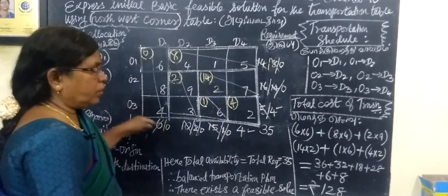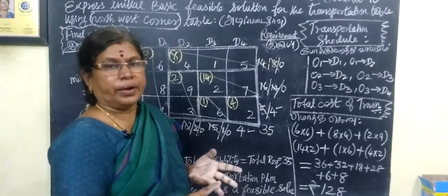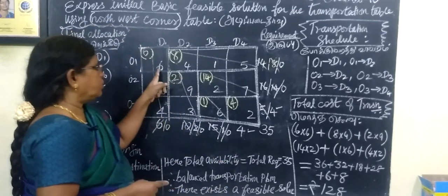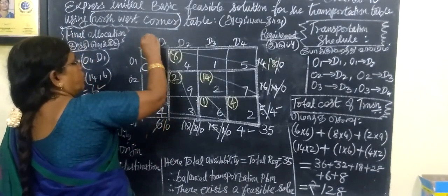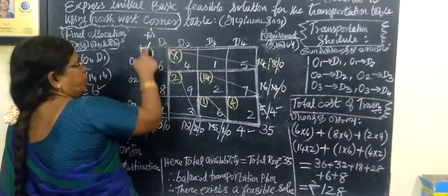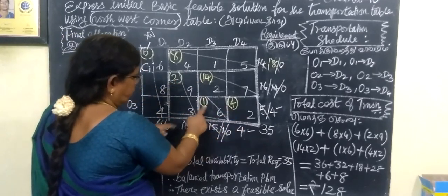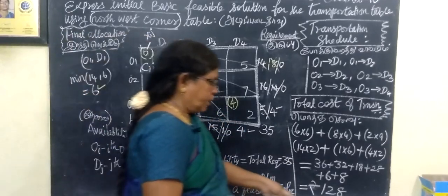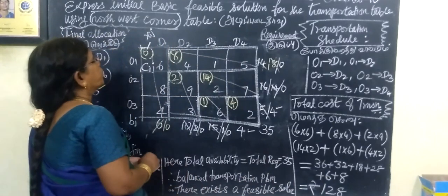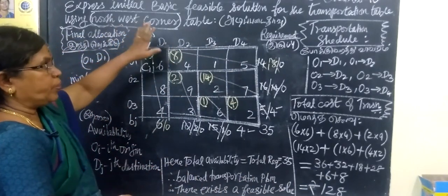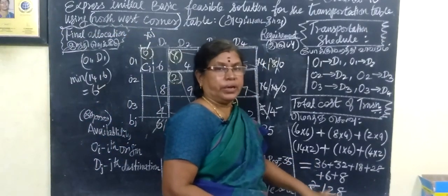Now calculate the total cost. Total cost means quantity multiplied by rate — that is, the sum of Cij times Xij for all routes. Multiply C11 by X11, and so on for each of the six routes, then add them all together. The final answer is 128. So using the Northwest Corner method, the minimum transportation cost is 128 rupees.